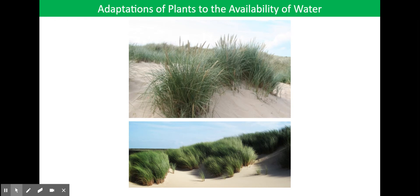The stomata are on the inner surface of the rolled leaf — the lower epidermis — so they are protected by the enclosed airspace. The stomata are in pits in the lower epidermis, which is also folded and covered by hairs. These adaptations help to reduce air movement and therefore loss of water vapour. The spongy mesophyll is very dense with few air spaces, so there is less surface area for evaporation of water.